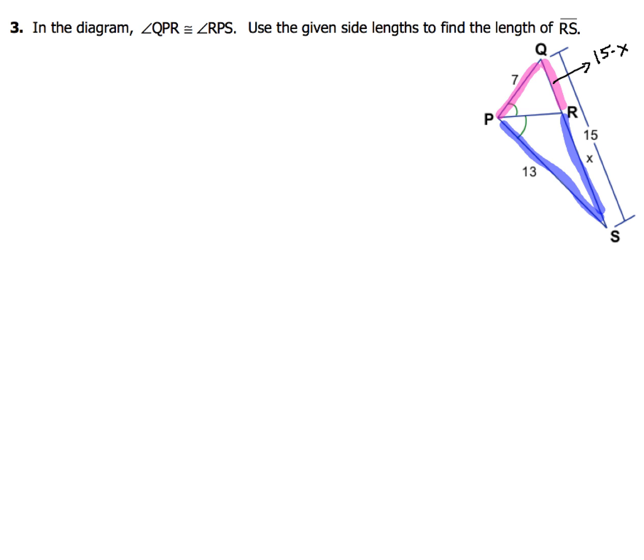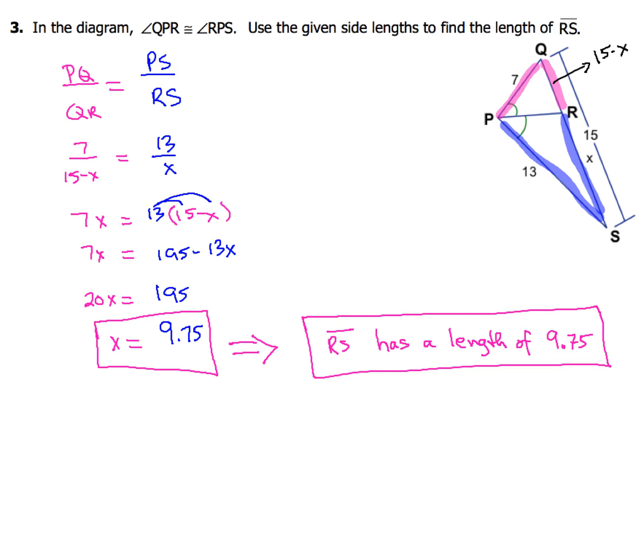So what I want you to do, go ahead and hit pause after you write down your proportion, take your time, set up each step, show your algebra like good little math students, and then come on back and see if you got the correct value for X. So how did you do? Did you get everything set up right? PQ over QR equals PS over RS. Then substituting on step two, you get 7 over 15 minus X equals 13 over X.